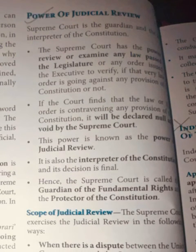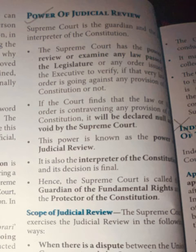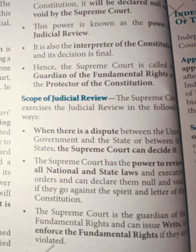Power of judicial review: The Supreme Court is the guardian and interpreter of the Constitution. The Supreme Court has the power to review or examine any law passed by the legislature or any order issued. If the court finds that a law or order is against the Constitution, it can declare it null and void. This power of judicial review is given to the Supreme Court. It is also the interpreter of the Constitution, and is called the guardian of fundamental rights and protector of the Constitution, so that the Constitution is not violated.